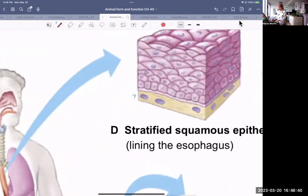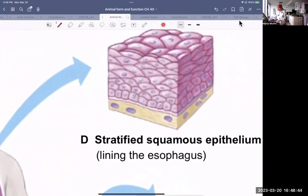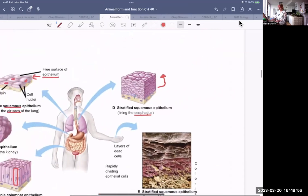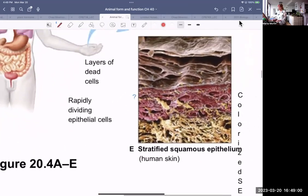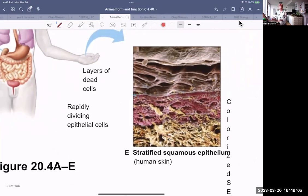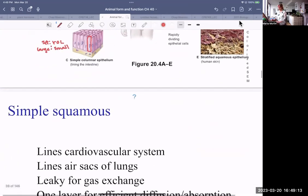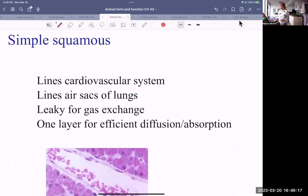Stratified squamous epithelial tissue is stratified in order that the lower cells can replace the upper cells that tend to be lost. So these are lining the esophagus. The human skin includes layers or stratified squamous epithelial tissue. The skin is constantly losing cells and must be replaced. So simple squamous lining lines the cardiovascular system, lines your arteries and your veins. It lines air sacs of the lungs. It's somewhat leaky for gas exchange and nutrient exchange. There's one layer. One layer assures efficient diffusion and absorption.